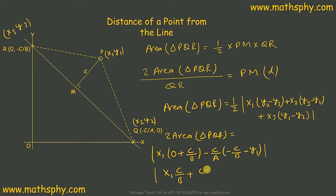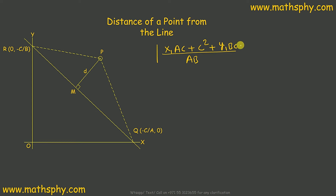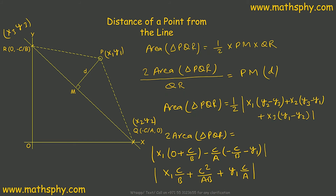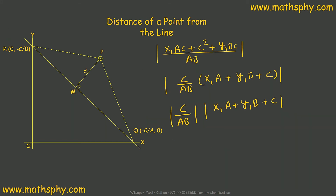Expanding and taking the LCM of a and b gives ab. Factoring out c/(ab) as common, the expression inside the modulus becomes ax1 + by1 + c. Therefore, two times the area of triangle PQR equals (c / ab) × modulus of (ax1 + by1 + c).